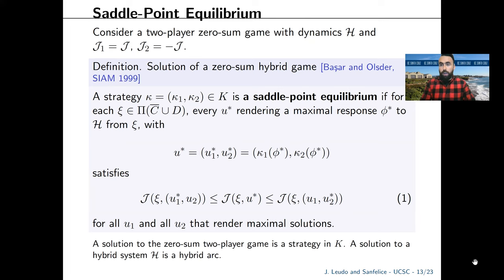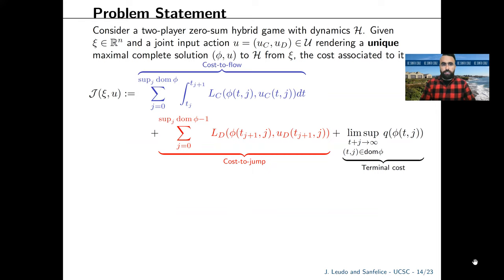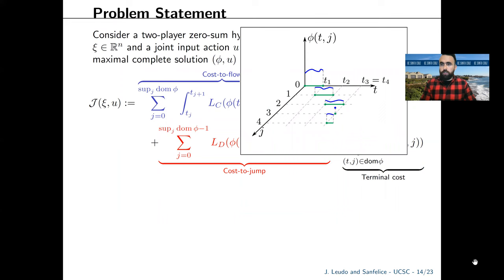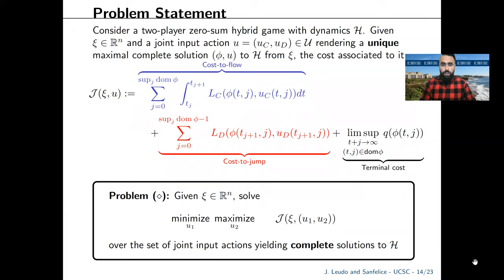The cost associated to the solution is J, including three terms: the cost to flow, cost to jump, and terminal cost. The cost to flow penalizes the evolution over every flow interval. The cost to jump penalizes each jump, adding all of them up. The terminal cost penalizes the final value of the state as T or J tend to infinity, since we focus on complete solutions. The problem is the min-max optimization of J over input actions yielding complete solutions.